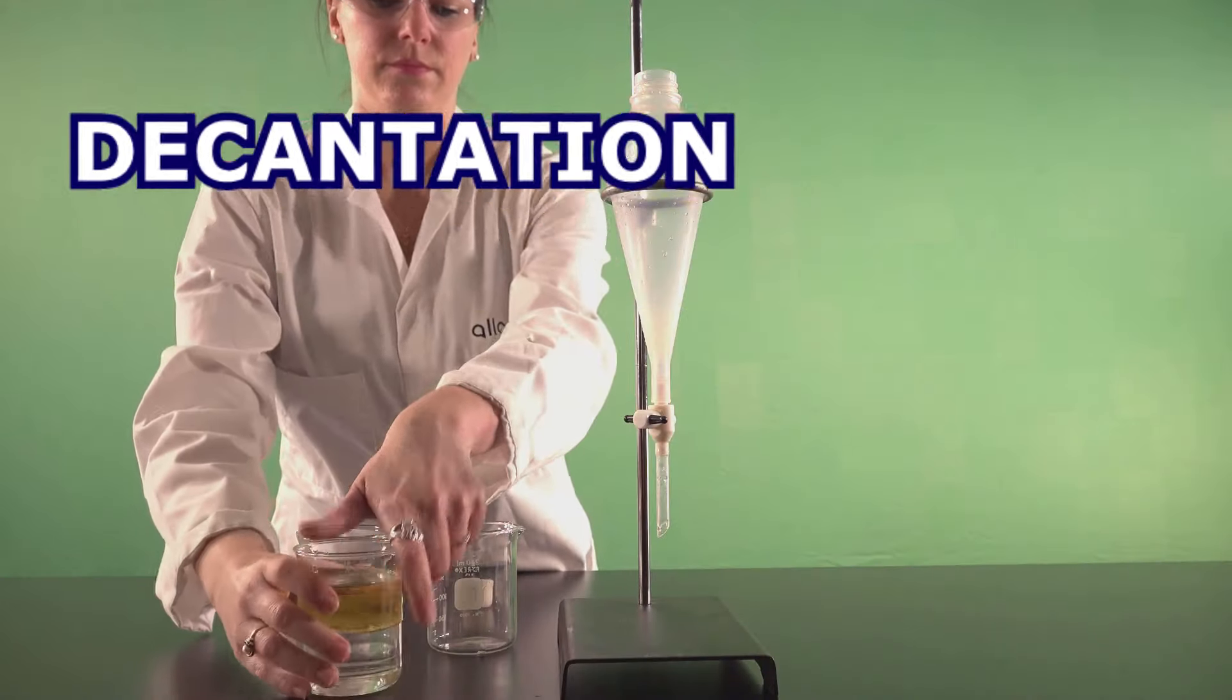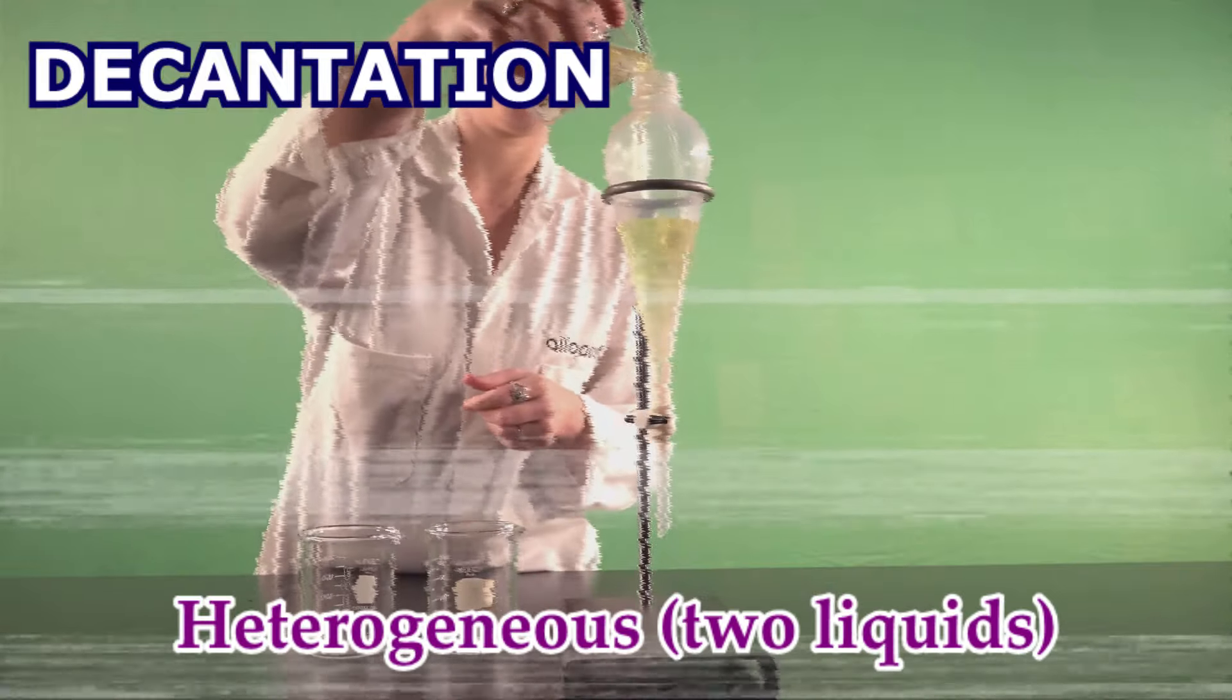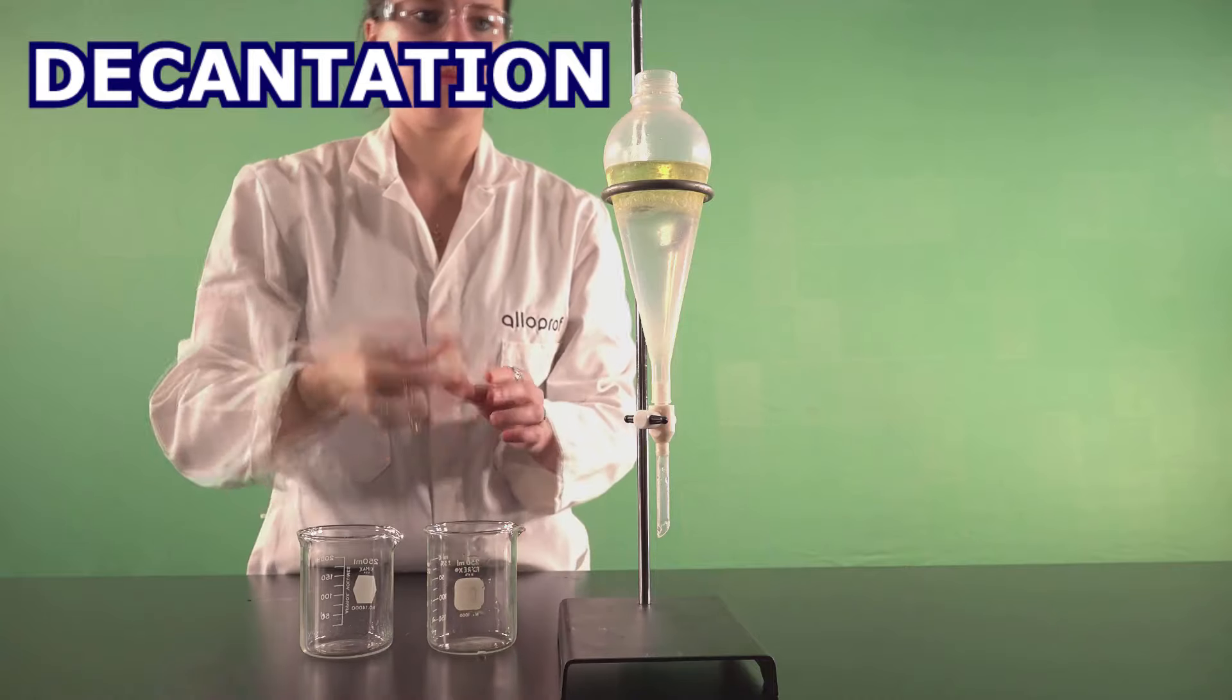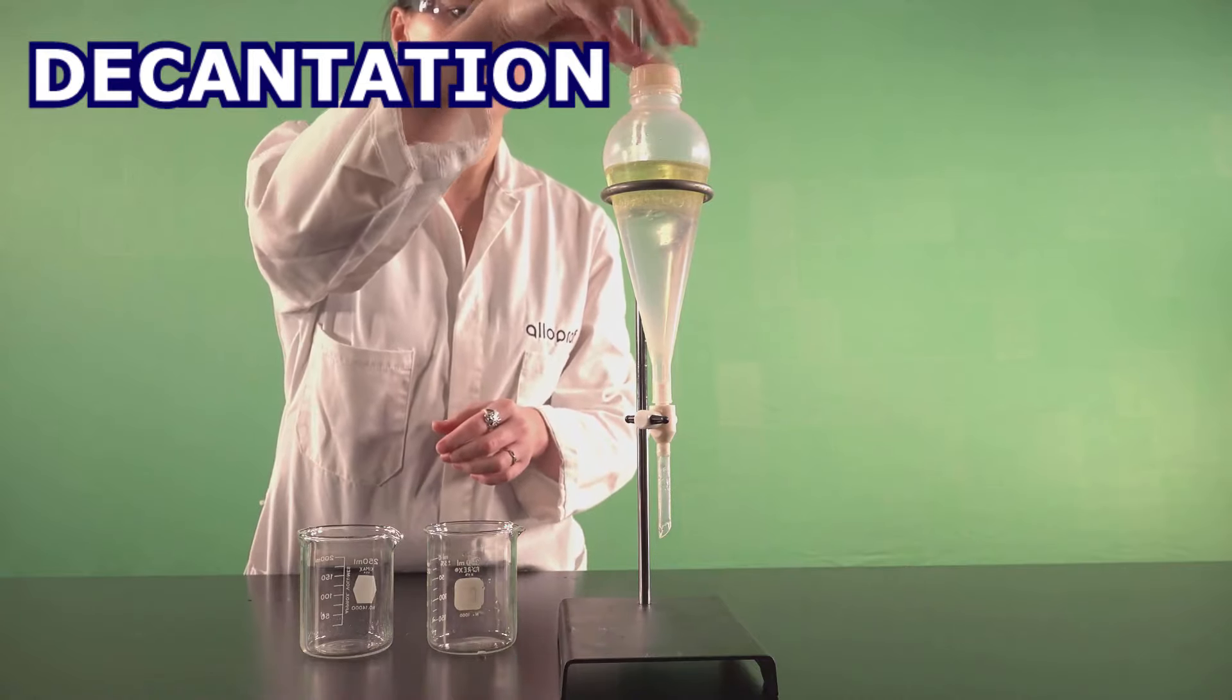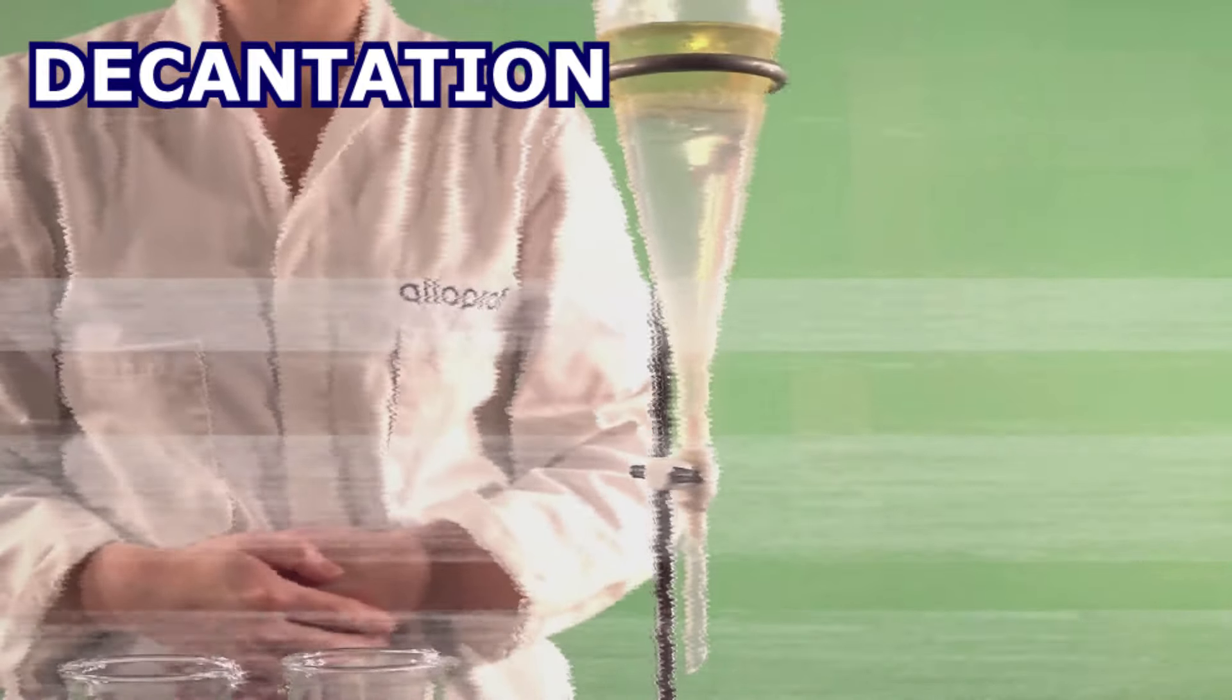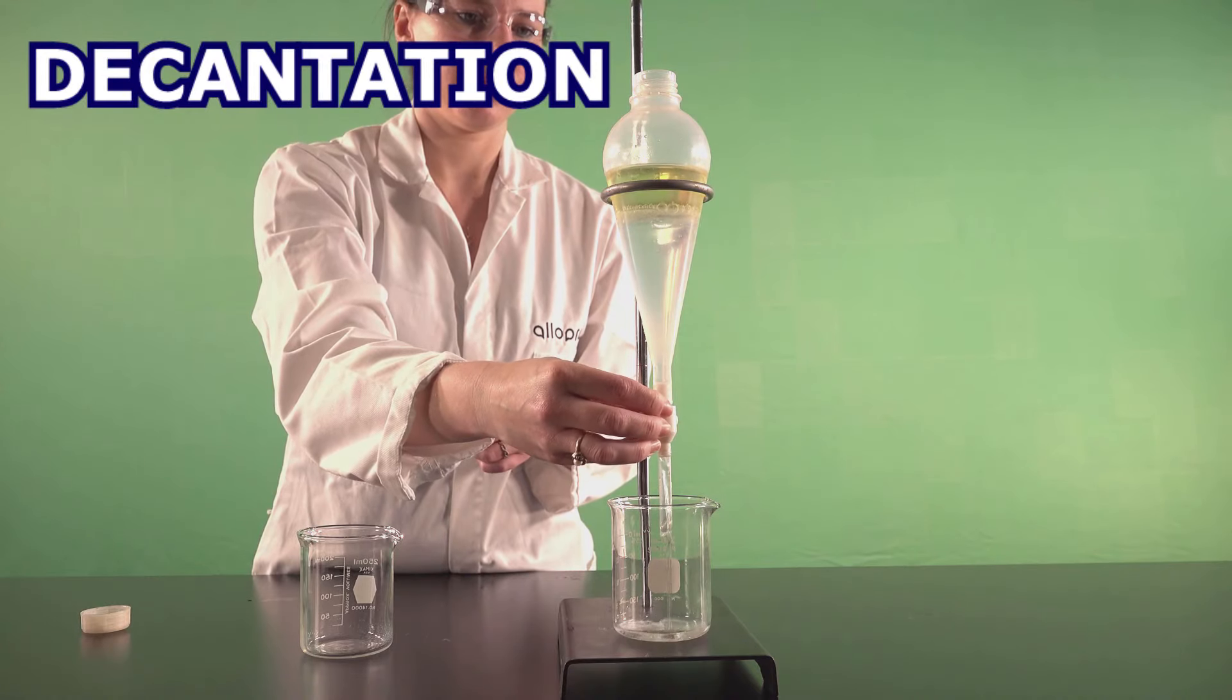Decantation is a method to separate heterogeneous mixtures of two liquids, like water and oil. The mixture is left to stand so that the denser liquid is at the bottom and the less dense at the top. Once this point is reached, one of the two is removed from the container.